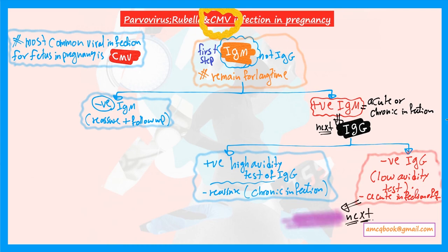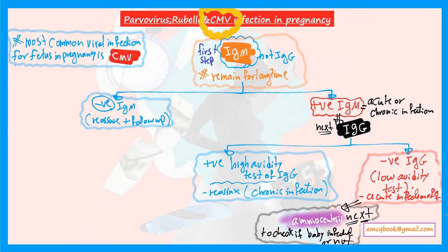If IgG is negative (low avidity test), that means the infection is acute and she is currently infected. The next step is amniocentesis to check whether the baby is infected or not. To summarize CMV: start with IgM; if IgM is positive, check IgG avidity; if low avidity (IgG negative), perform amniocentesis. That covers parvovirus, rubella, and CMV infection prevention in pregnancy. For the full course, contact us at amcqbook@gmail.com.